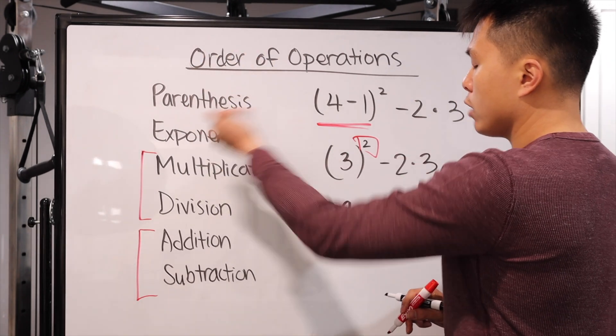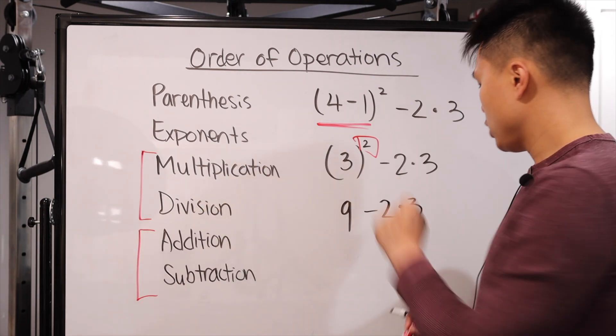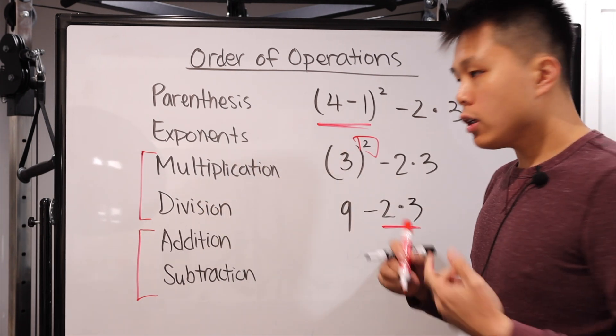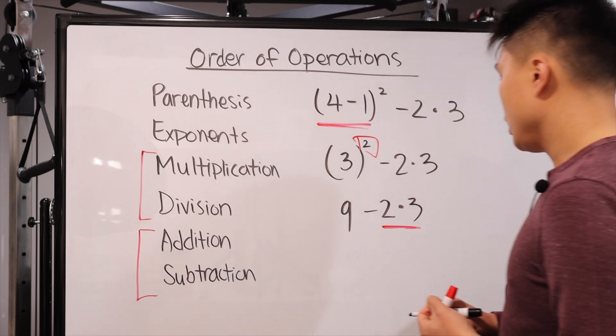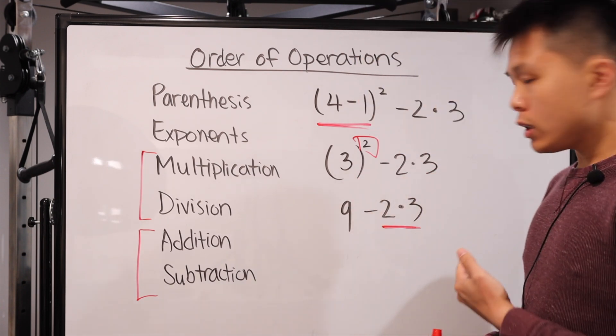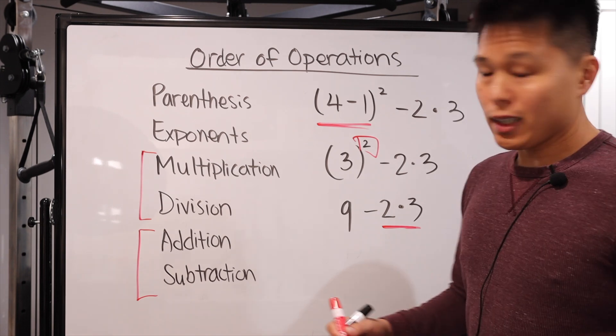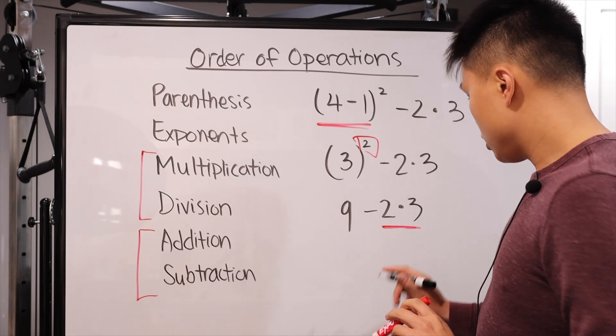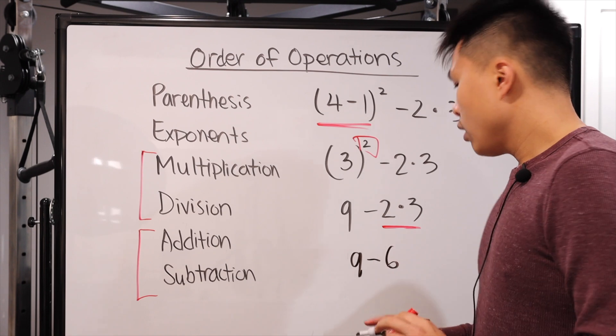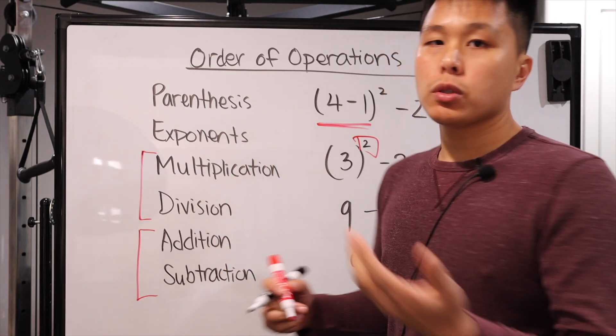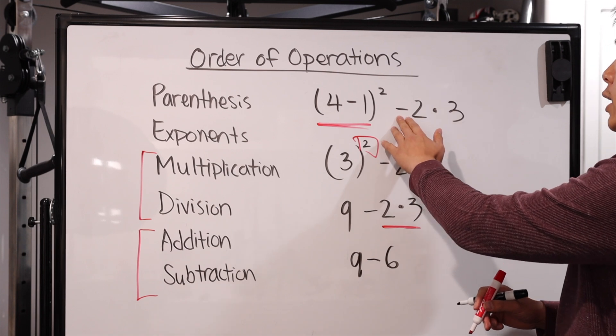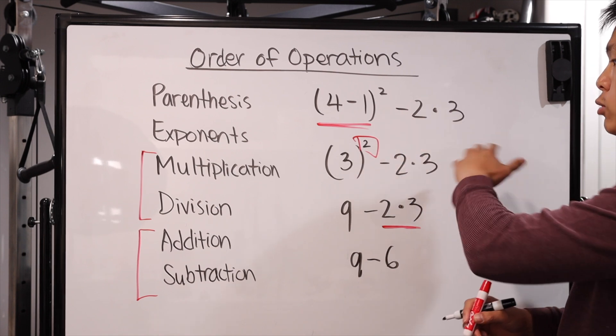So it's going to be 9 minus 2 times 3. Now we've gone through parentheses, we've gone through all the exponents. The next one is multiplication and division. There it is right here. Now here's where it gets a little tricky. Is it a negative 2 times 3 or is it just 2 times 3? In this case, actually, it's just 2 times 3. So it's going to be 9 minus 6.